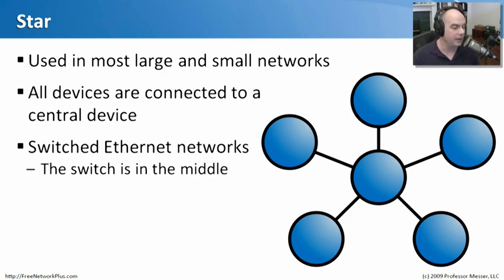You see this very commonly on switched Ethernet networks, where you put your Ethernet switch in the middle and everybody connects to that Ethernet switch. So this is not only a description of the physical network layout, but also your logical layout. The data goes from one device into the middle, the middle device figures out where the traffic should go and sends it on its way. That's called a star network.